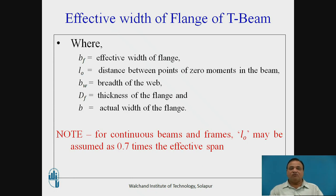Where BF is the effective width of flange, L0 is the distance between zero bending moments in the beam. And BW is breadth of web, DF is thickness of flange and B is actual width of flange. For continuous beams, the frames or rigid frames, L0 may be assumed as 0.7 times the effective span. For simply supported, L0 is equal to L.